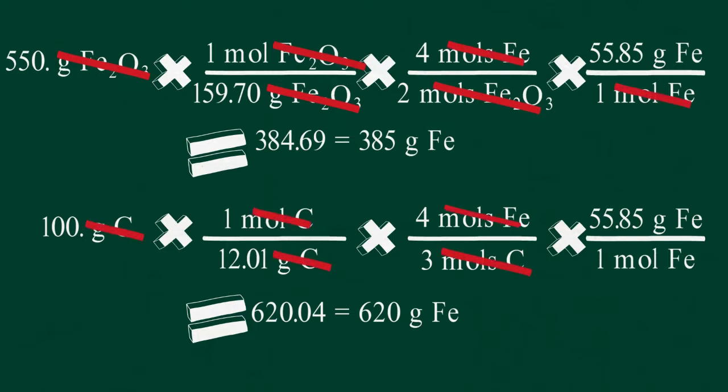620 grams of iron could be produced from 100 grams of carbon, and 385 grams of iron could be produced from 550 grams of hematite. This makes the limiting reagent hematite, and the theoretical yield of iron must be 385 grams.